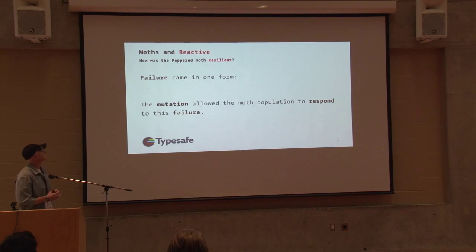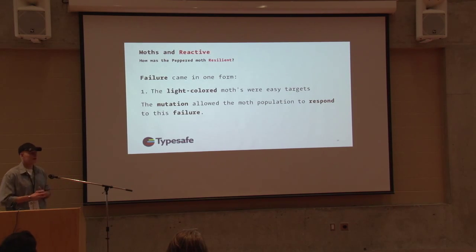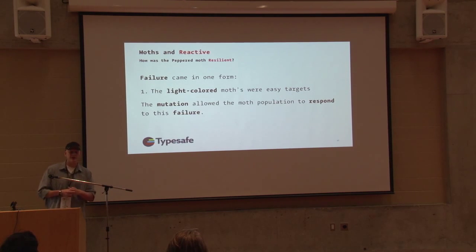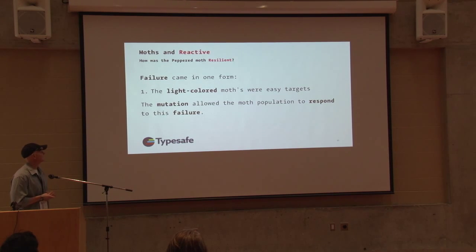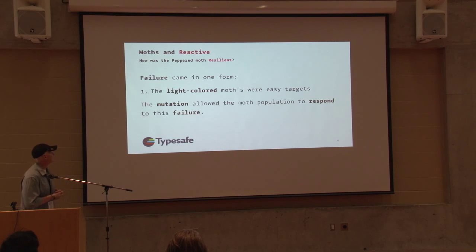For resilience — failure came in the form of the light-colored moth's camouflage no longer working. Think: one or five nodes in our cluster are no longer enough. The mutation allowed the moth population to respond to this failure. It was baked into the DNA of the organism.